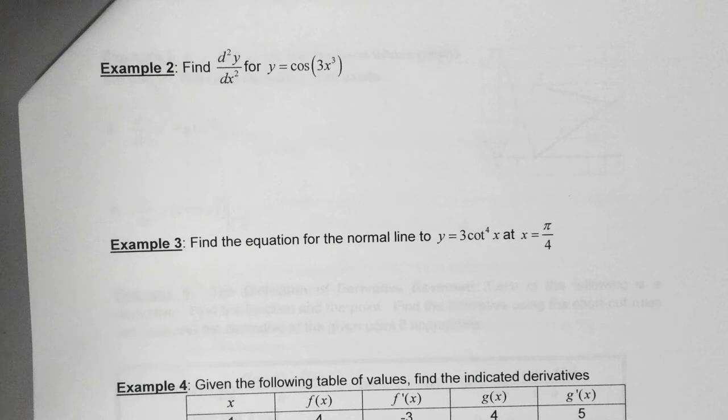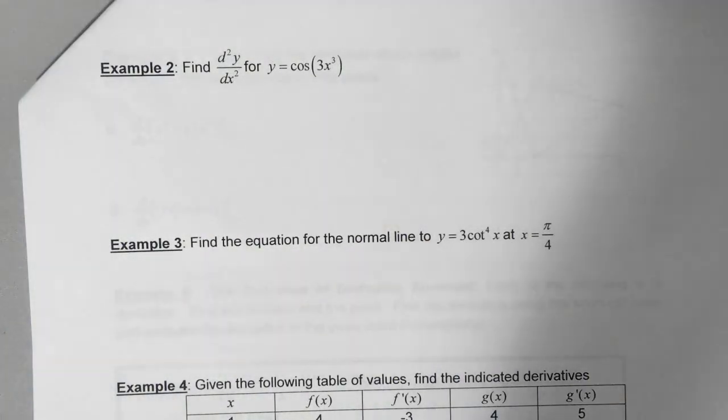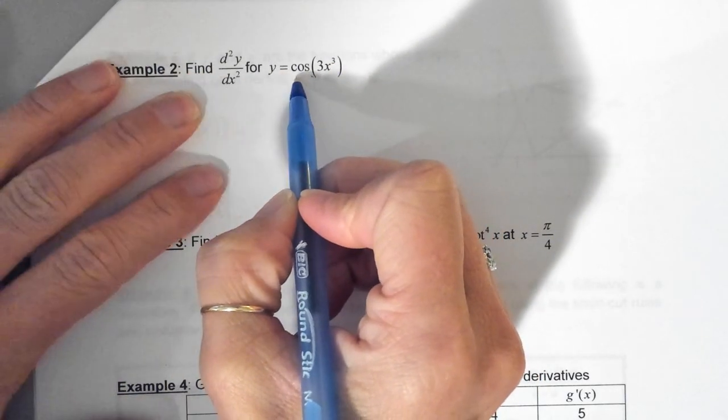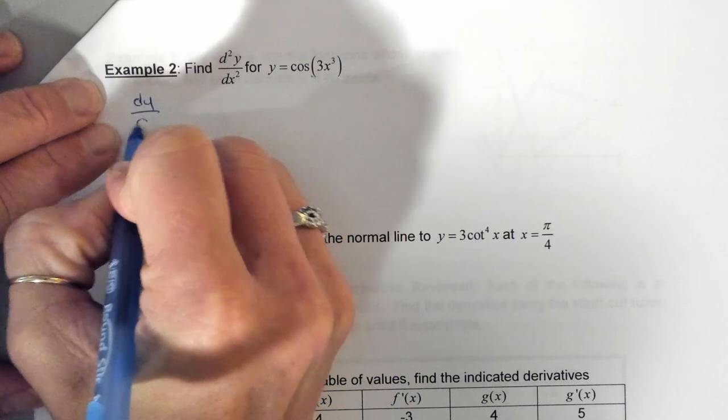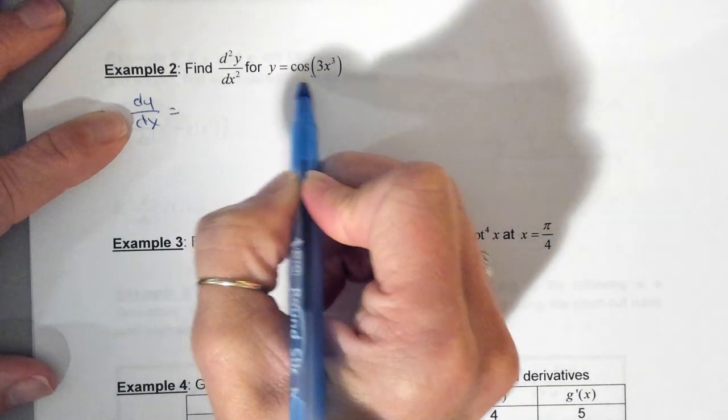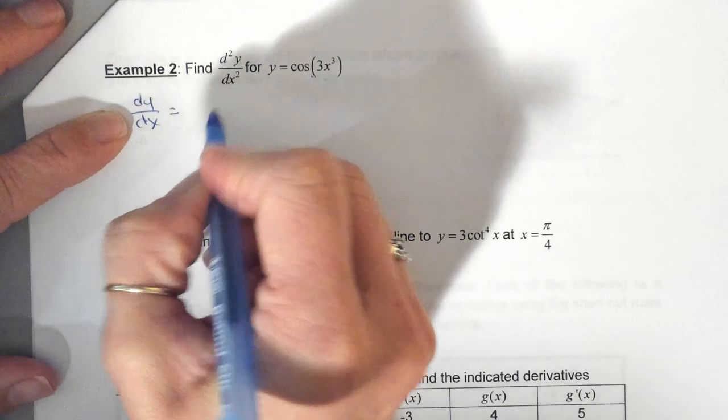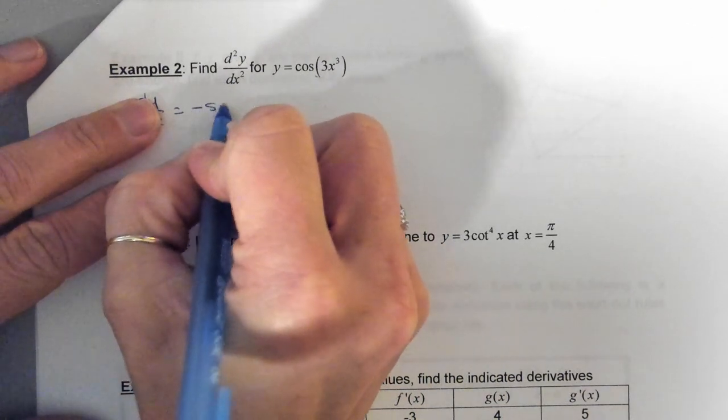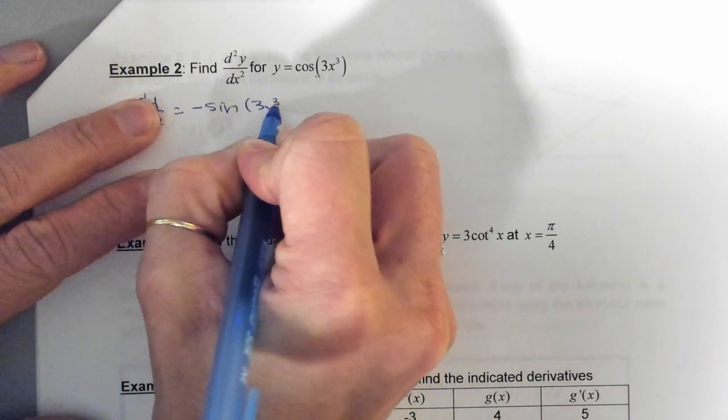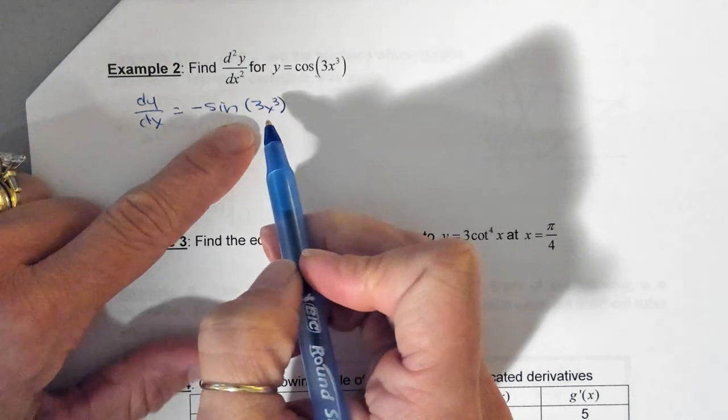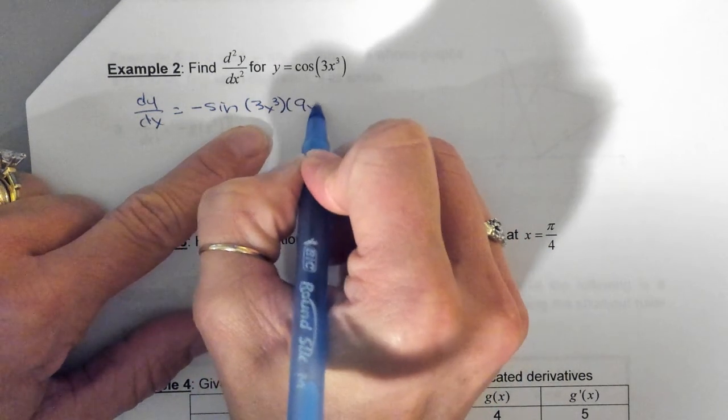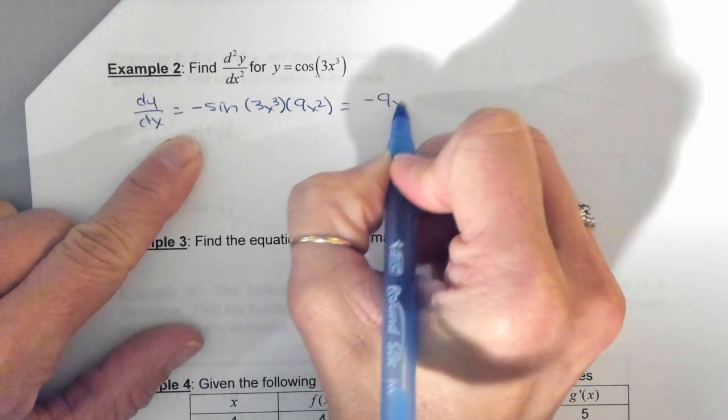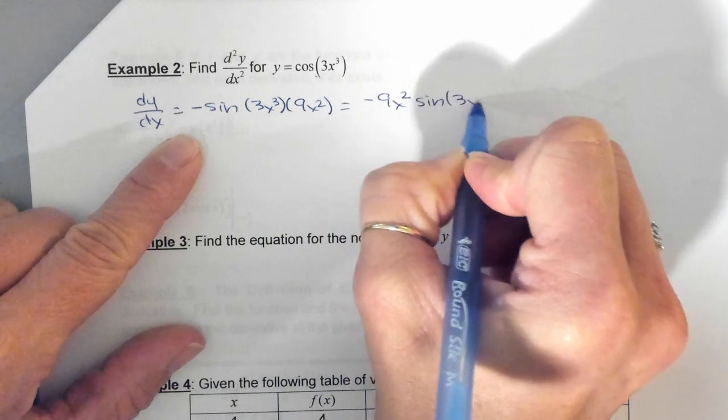In the case of example 2, you are asked to take the second derivative. So when we have something like this, we'll take the first derivative, which would be dy/dx, is equal to - your outside is what? The derivative of the outside? Negative sine of 3x cubed. Then we're going to take the derivative of the inside, so this is times 9x squared. I'm actually going to rewrite this and put this in front: negative 9x squared sine of 3x cubed.